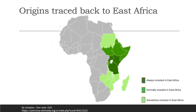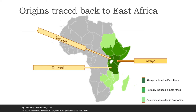Kanga as we know it today originated from the coastal region of East Africa, which comprises Kenya, Tanzania and Uganda as the main countries. It has and continues to be a crucial part of everyday life for tens of millions of people, both men and women in those regions.